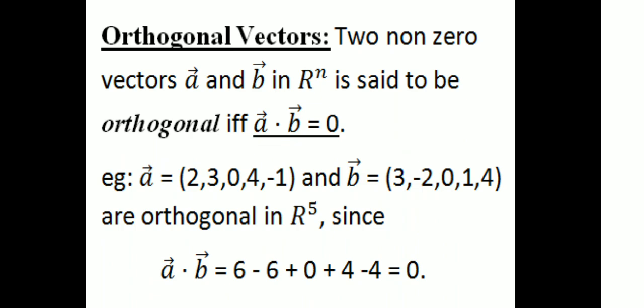If we compute vector a dot vector b equal to 0, it is orthogonal — it is if and only if. Let vector a = (2, 3, 0, 4, -1) and vector b = (3, 2, 0, 1, 2) — these are non-zero vectors in R^5. Then a dot b = 2×3 + 3×(-2) + 0×0 + 4×(-1) + (-1)×4 = 6 - 6 + 0 + 4 - 4 = 0. Since vector a dot vector b equals 0, the two vectors are orthogonal.